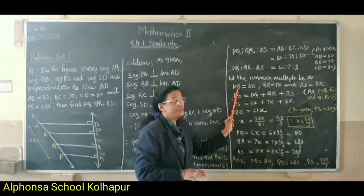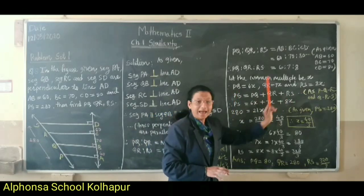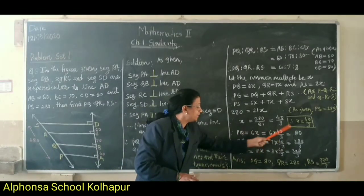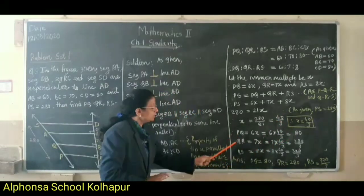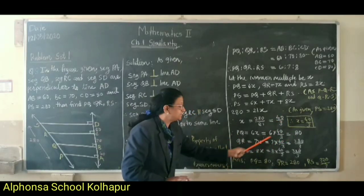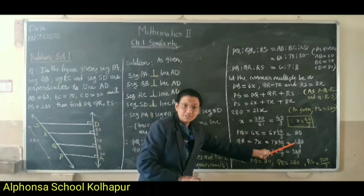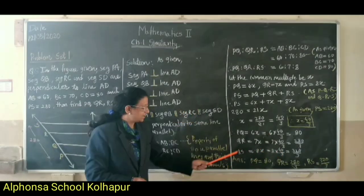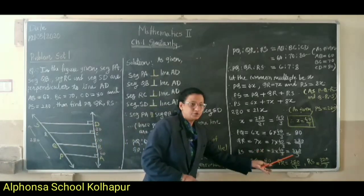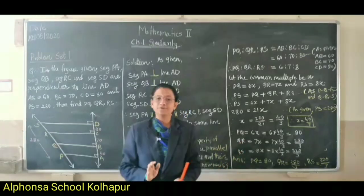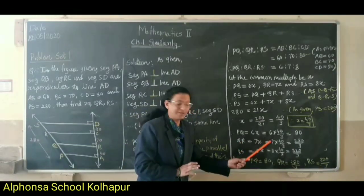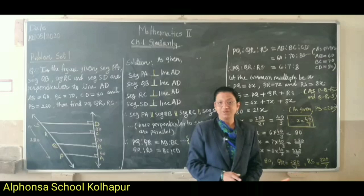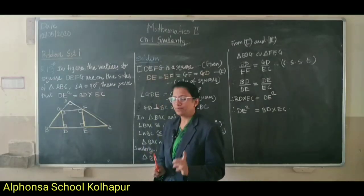Now substituting x equals 40/3 to find each segment: PQ equals 6x equals 6 times 40/3 equals 80. QR equals 7x equals 7 times 40/3 equals 280/3. RS equals 8x equals 8 times 40/3 equals 320/3. Therefore, PQ is equal to 80, QR is equal to 280/3, and RS is equal to 320/3.